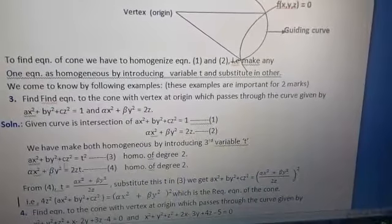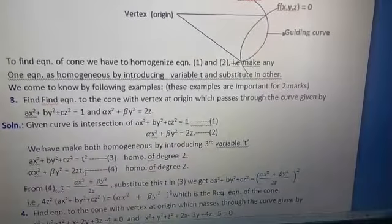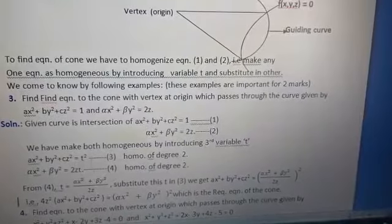And second equation, αx² + βy² = 2z. Then you have to make it 2zt, so it becomes also second degree. So both are second degree homogeneous equations.